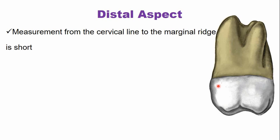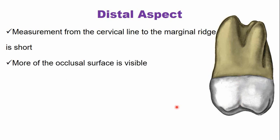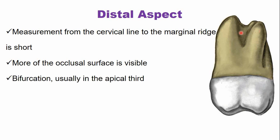From the distal aspect, the crown length from the cervical line to the distal marginal ridge is slightly less than the crown height on the mesial side. Because of this, part of the occlusal surface is visible from the distal aspect, and part of the buccal surface is also visible due to the convergence of the crown on the distal side. Sometimes there are root bifurcations on the distal side in the apical third, where the roots divide into the distal buccal root and the palatal root, but this division is usually limited to the apical third.